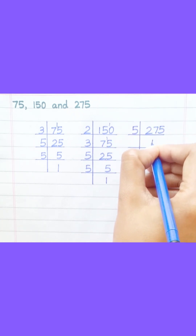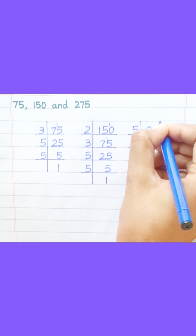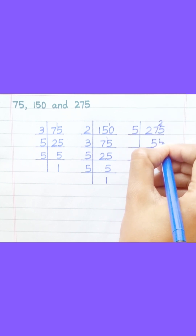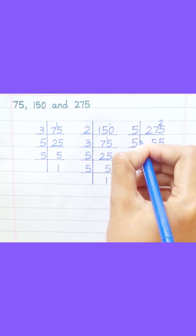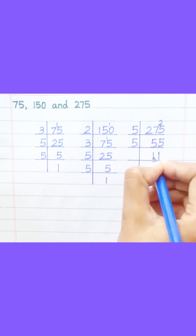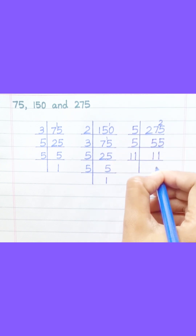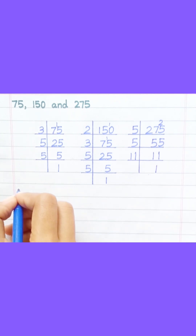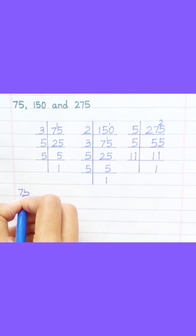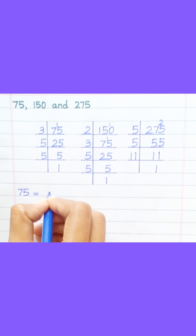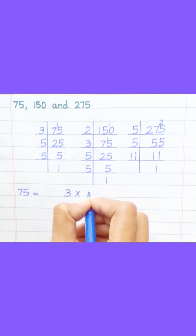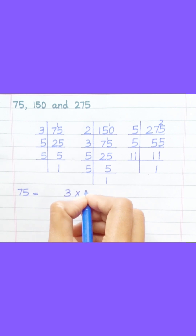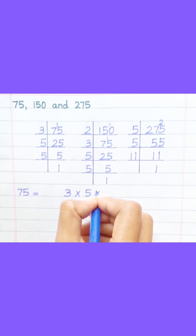5 5's are 25, 5 1's are 5, 11 1's are 11. 75 equals 3 multiply 5 multiply 5.